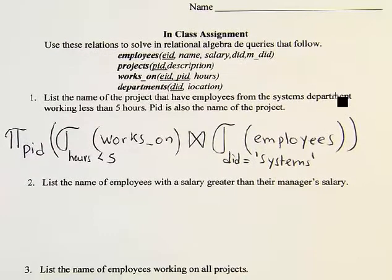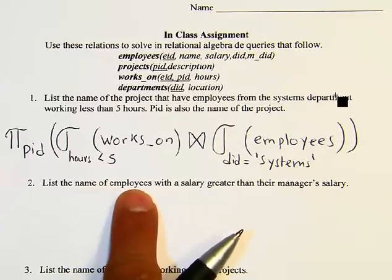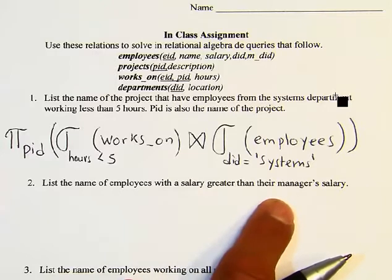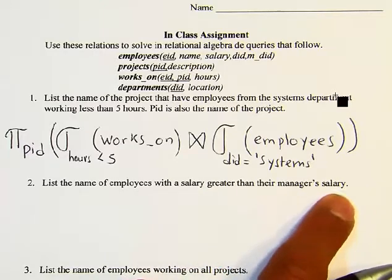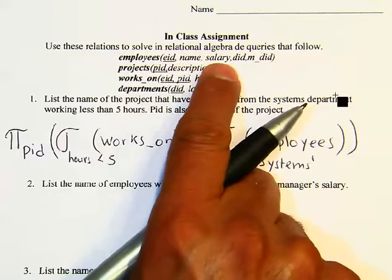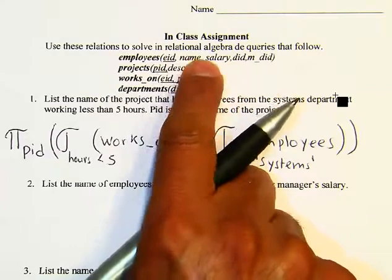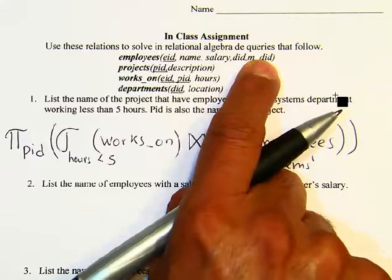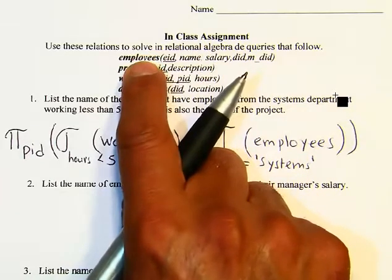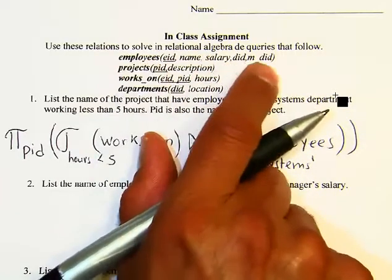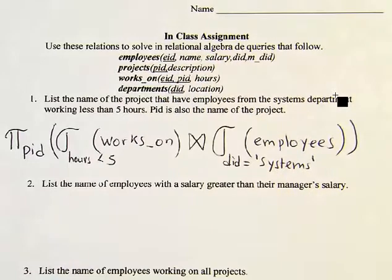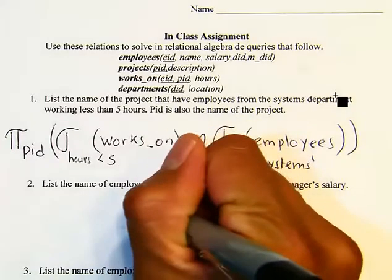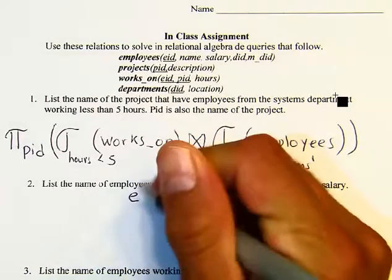For number two, list the names of employees with a salary greater than their manager's salary. We get the employee's salary from the employees table, and we get the manager ID, but we don't directly see the manager's salary. We'll have to open the employees table again for the managers in order to compare salaries.